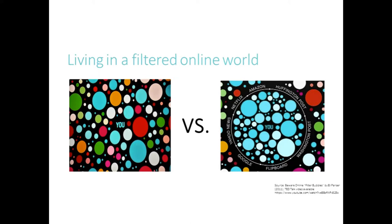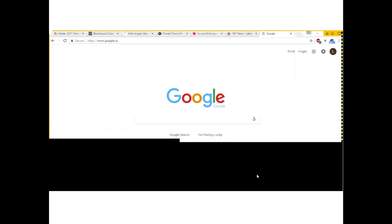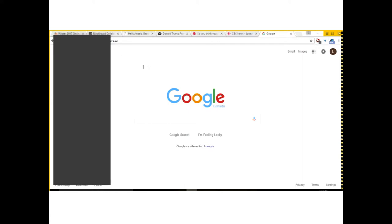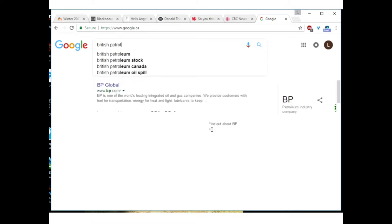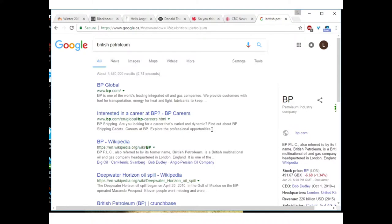I want to do a quick test to see what actually happens when we all search at the same time. I'm going to share my screen, and I'd like all of you to go to Google. We're all going to type in the exact same word and see what kind of results we get back. The company I'm typing in is called British Petroleum — I'd like all of you at home to do this exact same search.